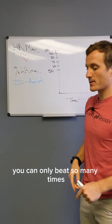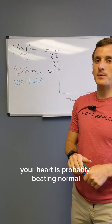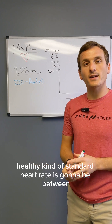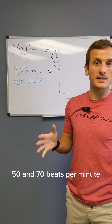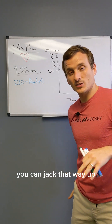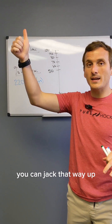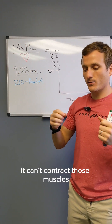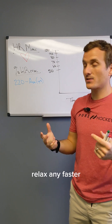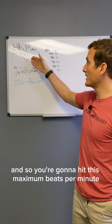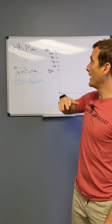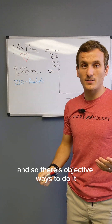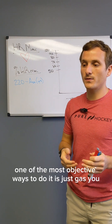You've got a heart that can only beat so many times. Right now at rest, your heart is probably beating at a normal healthy rate — somewhere between 50 and 70 beats per minute. When you exercise, you can jack that way up, but there's going to be a point at which your heart just can't contract and relax any faster. That is your heart rate max.